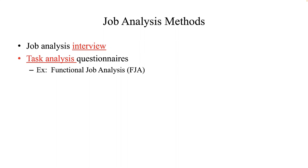Noteworthy among the prefabricated questionnaires is Functional Job Analysis, or FJA, which was developed for the Department of Labor. This method was used to develop the Dictionary of Occupational Titles, which has served as the basis for the present O-Net Online. O-Net Online classifies jobs in terms of tasks associated with data, people, and things. It also identifies levels of worker attributes such as required levels of mathematics and reasoning. I urge you to look at O-Net Online.